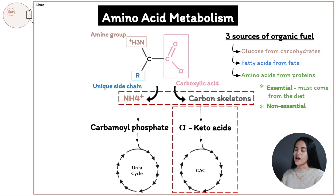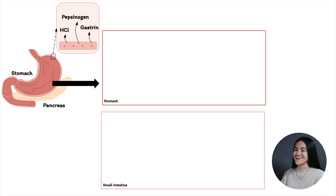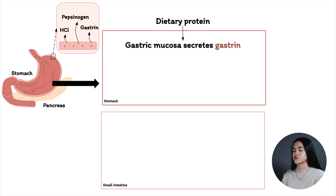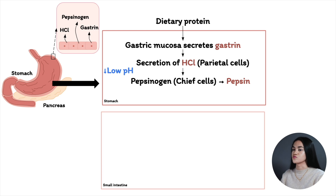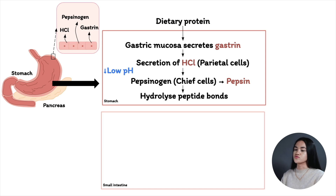So this leads us to how do we actually break down dietary proteins? This occurs in the gastrointestinal tract. When dietary protein enters the stomach, this stimulates the gastric mucosal to secrete the hormone gastrin. And this is going to stimulate the secretion of hydrochloric acid and pepsinogen, which is going to decrease the pH of the stomach. The lower pH denatures the proteins and unfolds globular proteins.